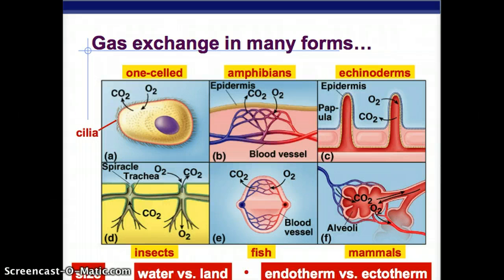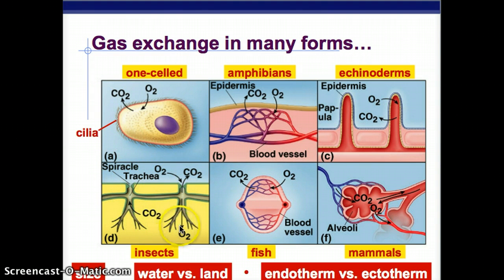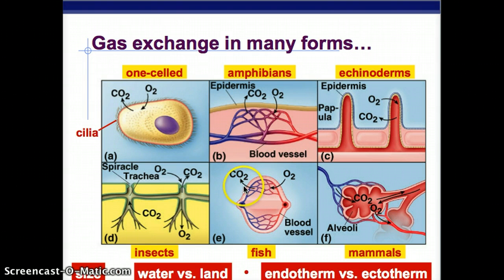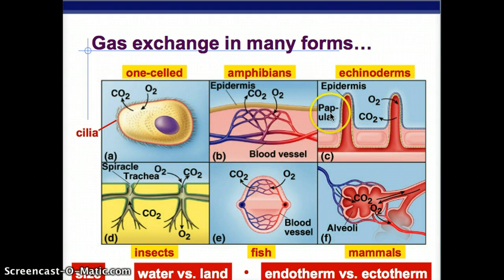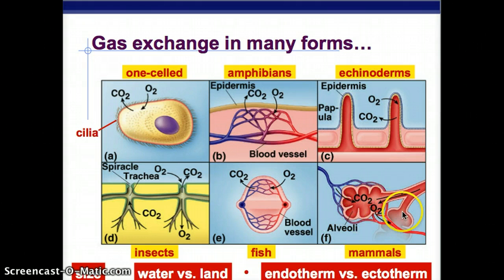Here are examples of gas exchange. A single-celled organism with cilia exchanges directly with its aquatic environment, taking in oxygen and giving off carbon dioxide. Insects have spiracles - little openings - and trachea tubes so carbon dioxide comes out and oxygen goes in. Amphibians have blood vessels right next to their skin, working similarly to single-celled diffusion. Fish have a gill system where water flows in and out, extracting oxygen and releasing carbon dioxide. Echinoderms exchange through their epidermis, and mammals have alveoli.